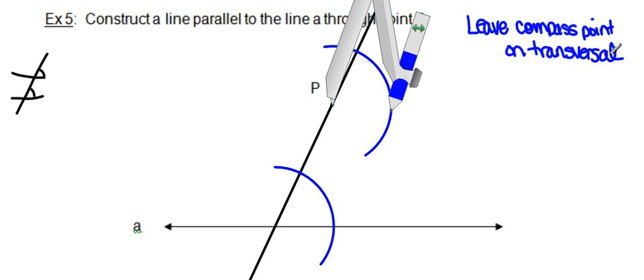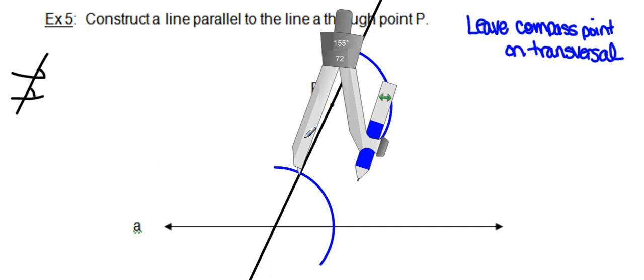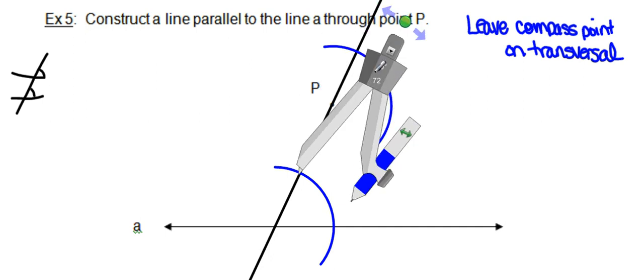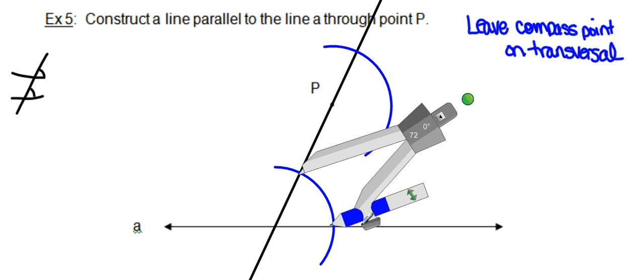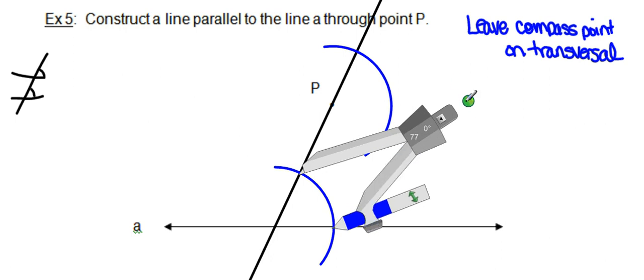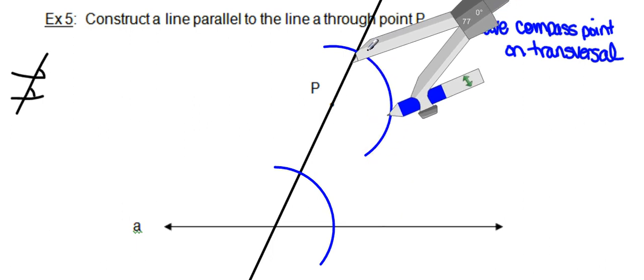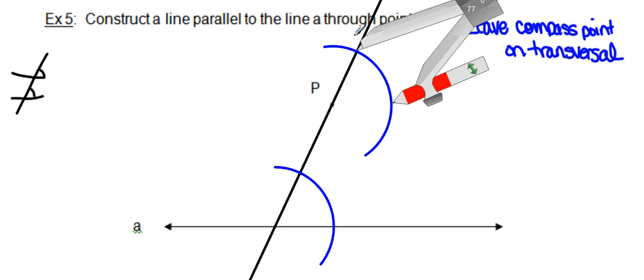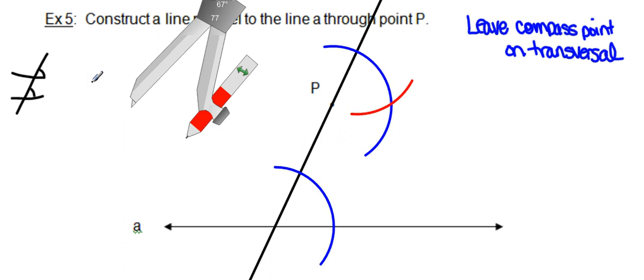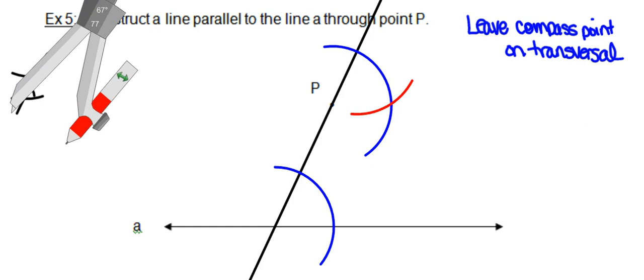Your next step in copying an angle is to go back to the original angle and measure the distance that the angle opens up. Then slide the compass point up the transversal — don't stop at point P, keep going to where the blue arc crosses the transversal. Draw your second arc there, then grab your straightedge and construct the line.